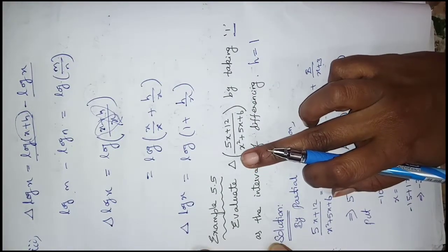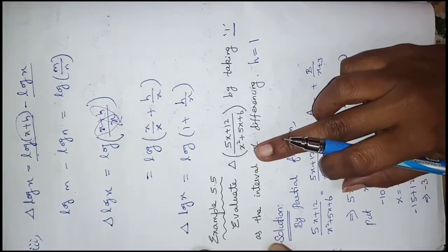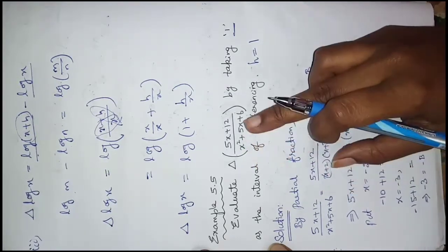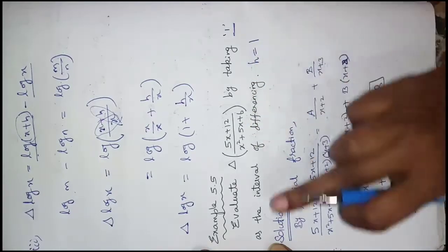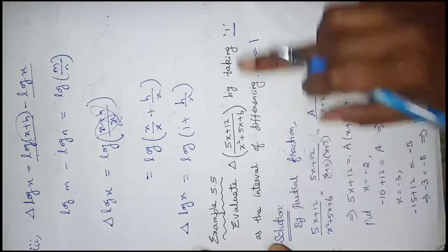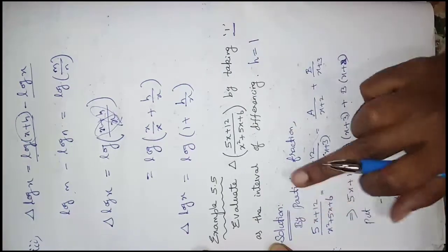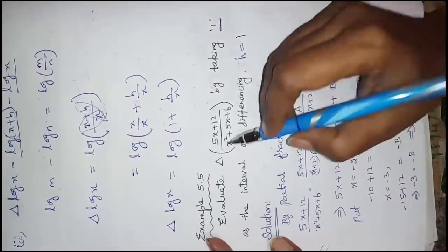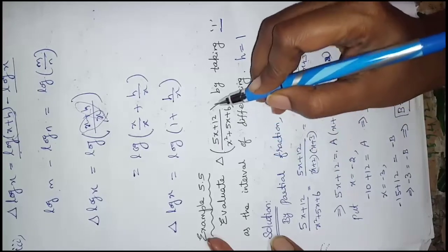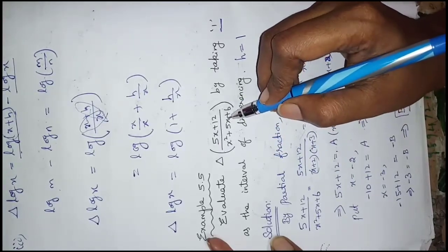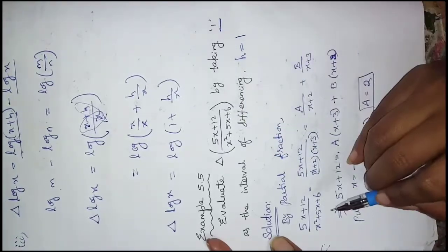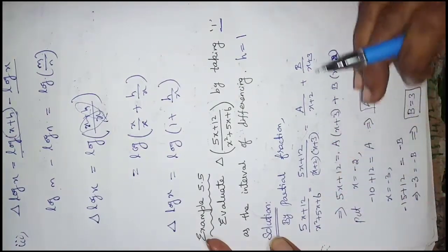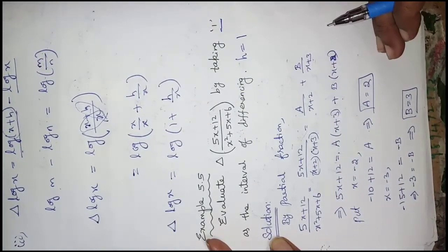The forward operator applies to f(x), giving f(x + h) with h = 1, so x + 1. Solution: we will use partial fractions. If you apply the delta operator directly, it will be somewhat complicated. Using partial fractions first will make it faster.